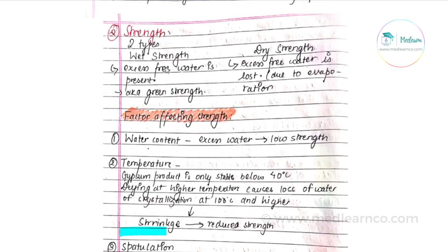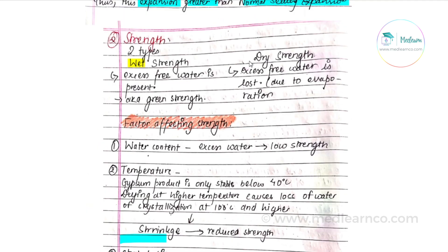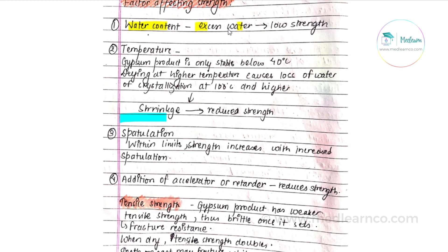The second property is strength. Wet strength refers to the condition where excess free water is present. Dry strength is when excess free water is lost due to evaporation — this is also called green strength. Strength depends on water content: if water content is greater relative to powder, strength is obviously lower.